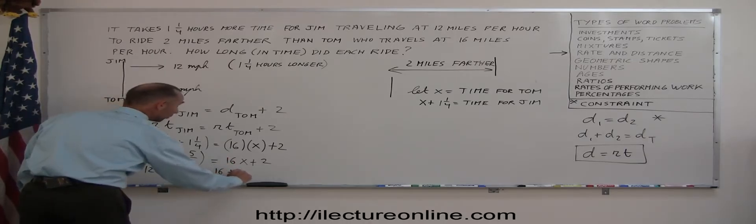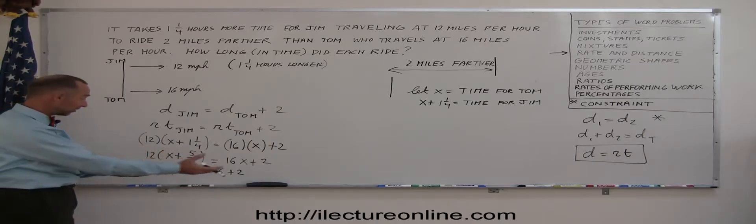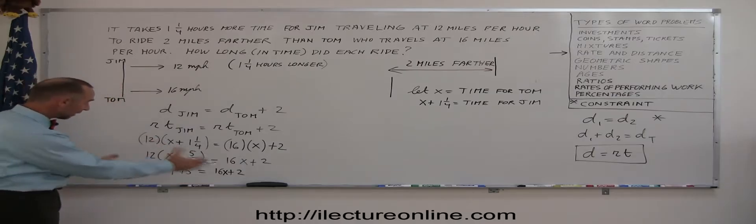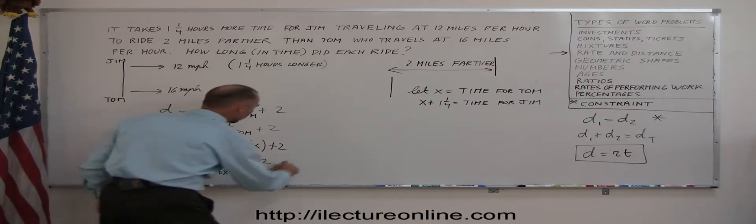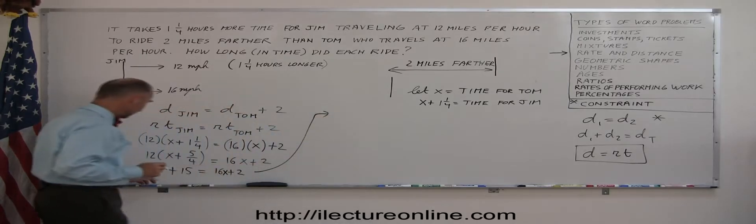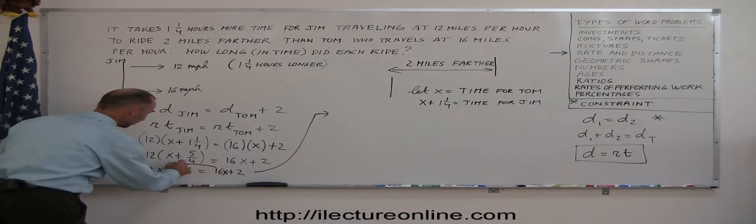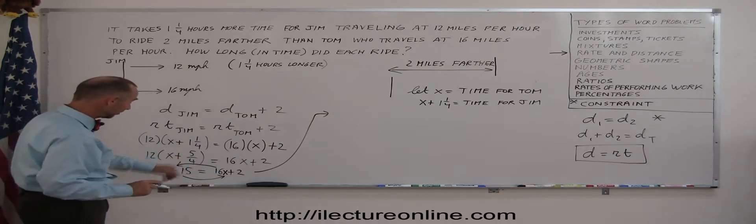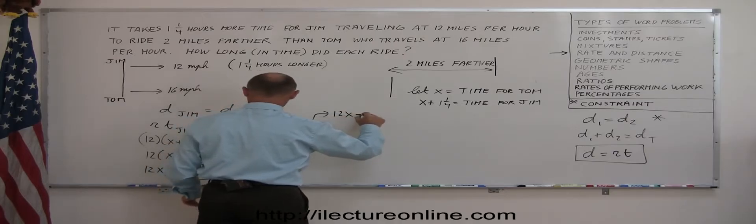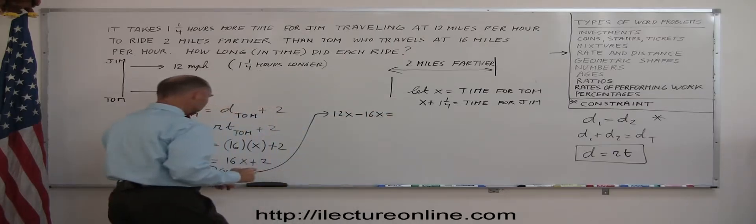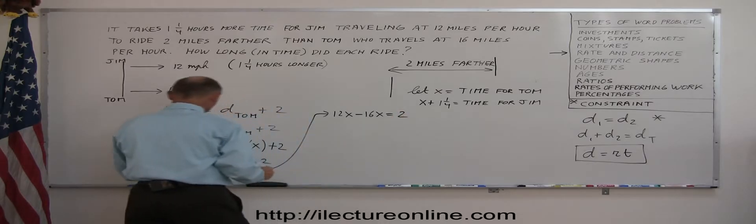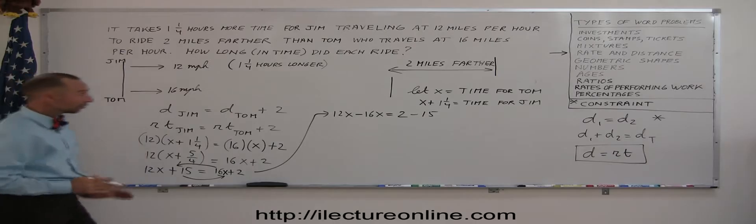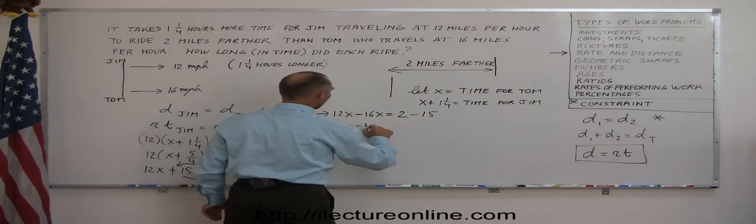Now we go ahead and solve that. And the first thing we come across is a mixed number which you want to turn into an improper fraction. So we have 12 times x plus 5 over 4, because one and a quarter is the same as 5 over 4, is equal to 16x plus 2. We can now go ahead and multiply this out. So 12 times x is 12x. Now 12 times 5 over 4. 4 goes into 12 three times. So 3 times 5 is 15.